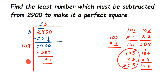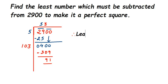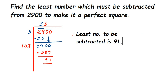The question is to find the least number to subtract from 2900 to make it a perfect square. If the number were already a perfect square, the remainder would be 0. Since we got remainder 91, this is the extra amount. If we remove 91 from 2900, the result will be a perfect square. Therefore, the least number to be subtracted is 91.